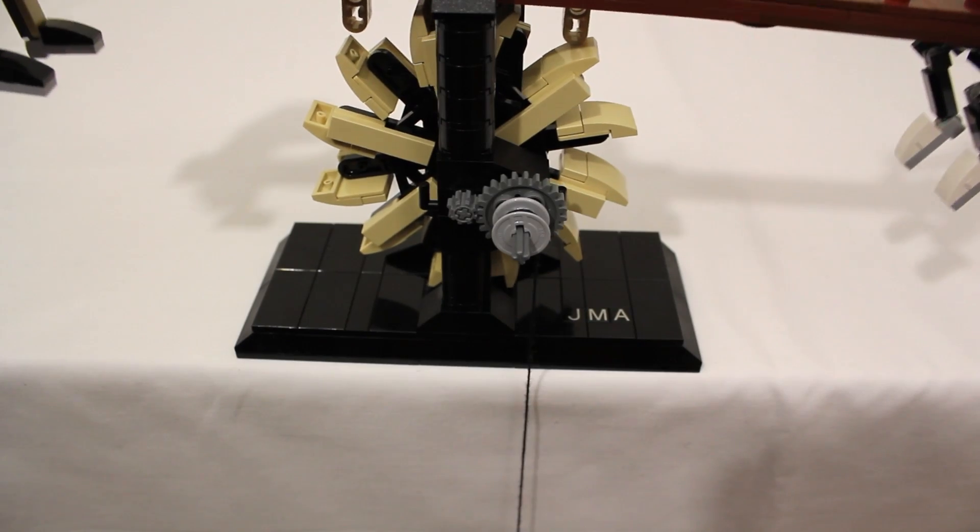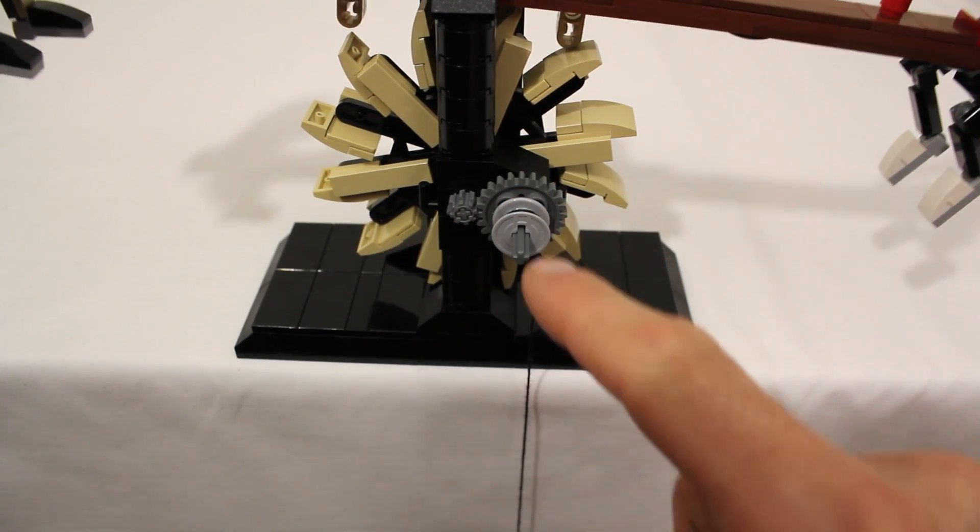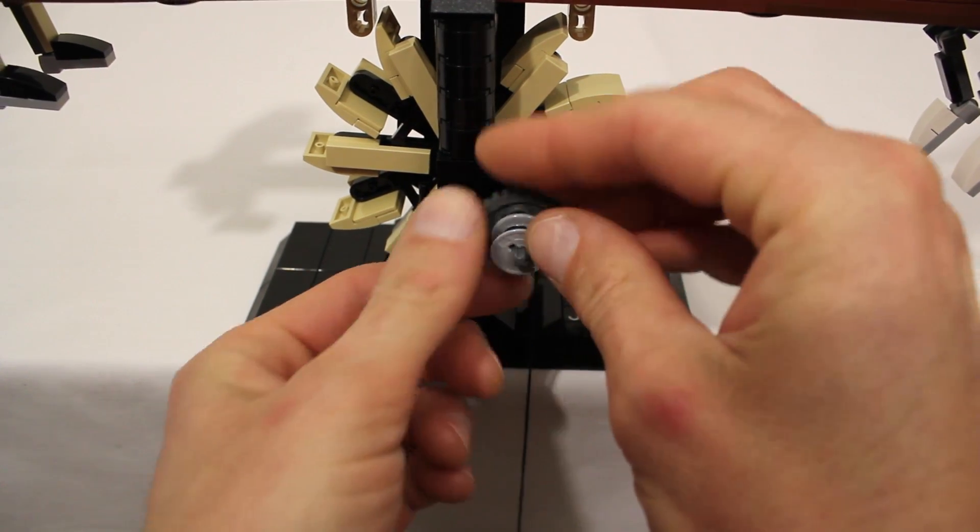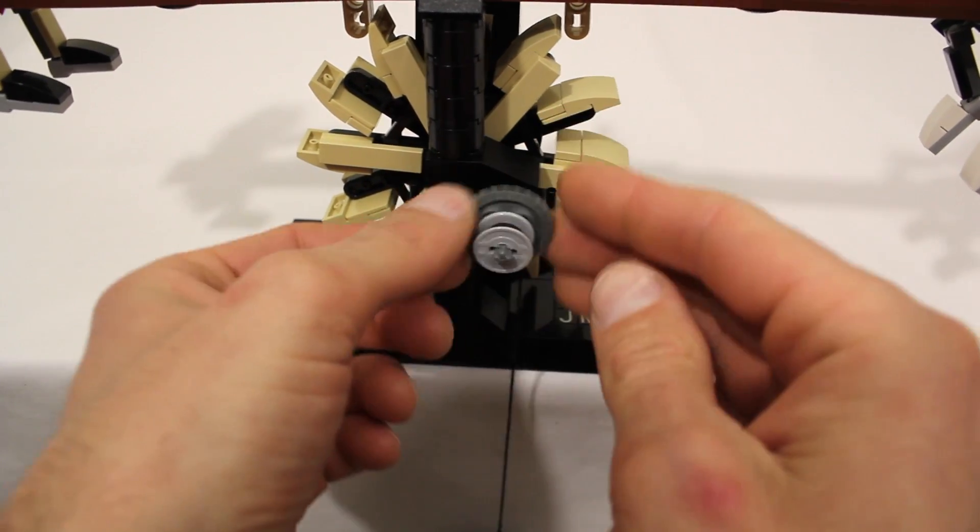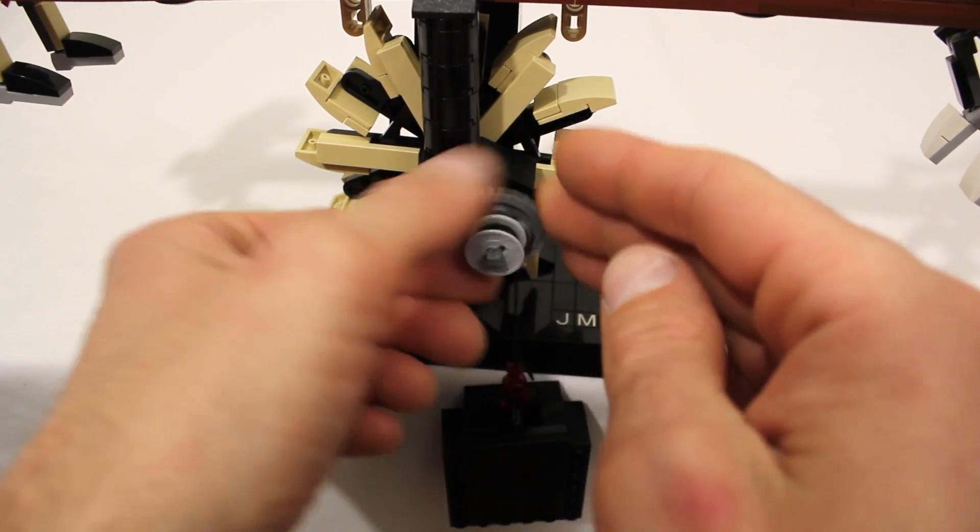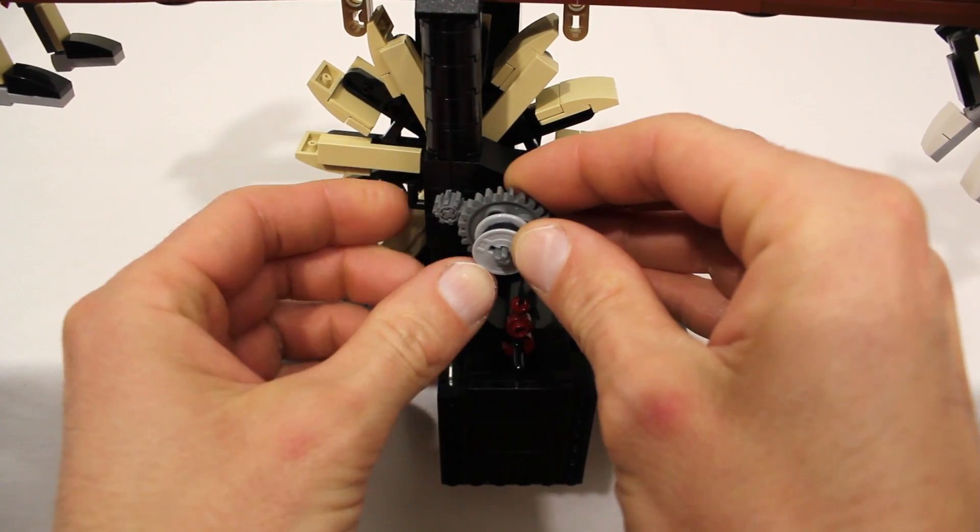One advantage of having this gearing system is that when I need to reset the weight, I can just slide this gear forward on the axle to disengage it. Then I can rotate it to bring the weight up and just slide it back to re-engage it.